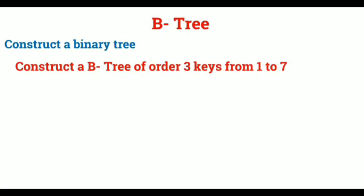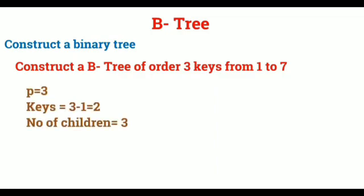Next, let's construct a B-tree for your better understanding. Construct a B-tree of order 3. Keys are 1, 2, 3, 4, 5, 6, and 7. So, p is equal to 3, that is order. Number of keys is p minus 1, which is 2. Number of children is 3. Let's do it step by step.